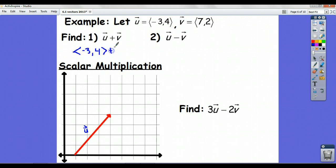So, you should have gotten this answer here. Negative 3 plus 7 is equal to 4, and 4 plus 2 is equal to 6. Okay, no big deal. It's pretty straightforward.